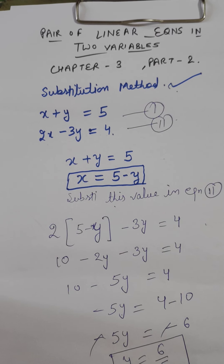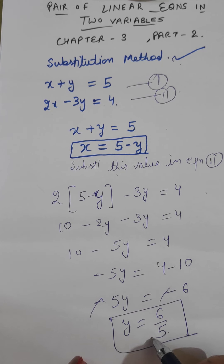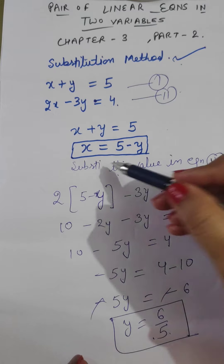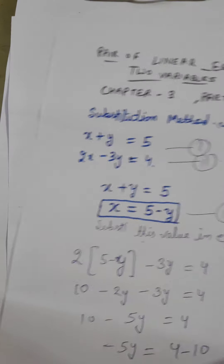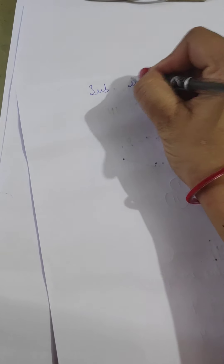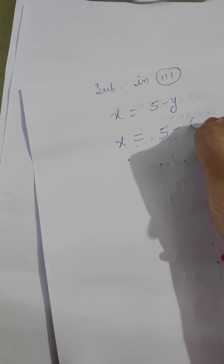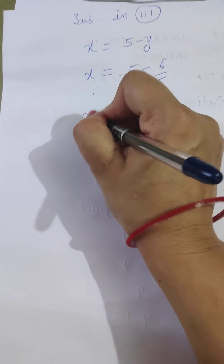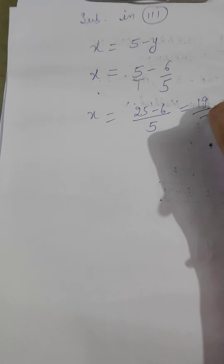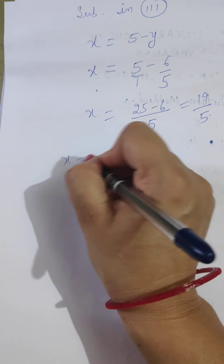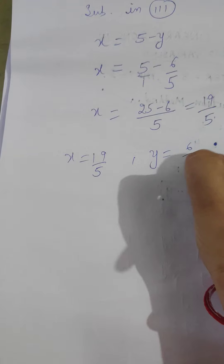So y equals 6 upon 5. This is the value of y. Now we substitute this value of y back into x equals 5 minus y. So x equals 5 minus 6 upon 5. Taking LCM, x equals 25 minus 6 upon 5, which equals 19 upon 5. So our solution is x equals 19 upon 5 and y equals 6 upon 5.